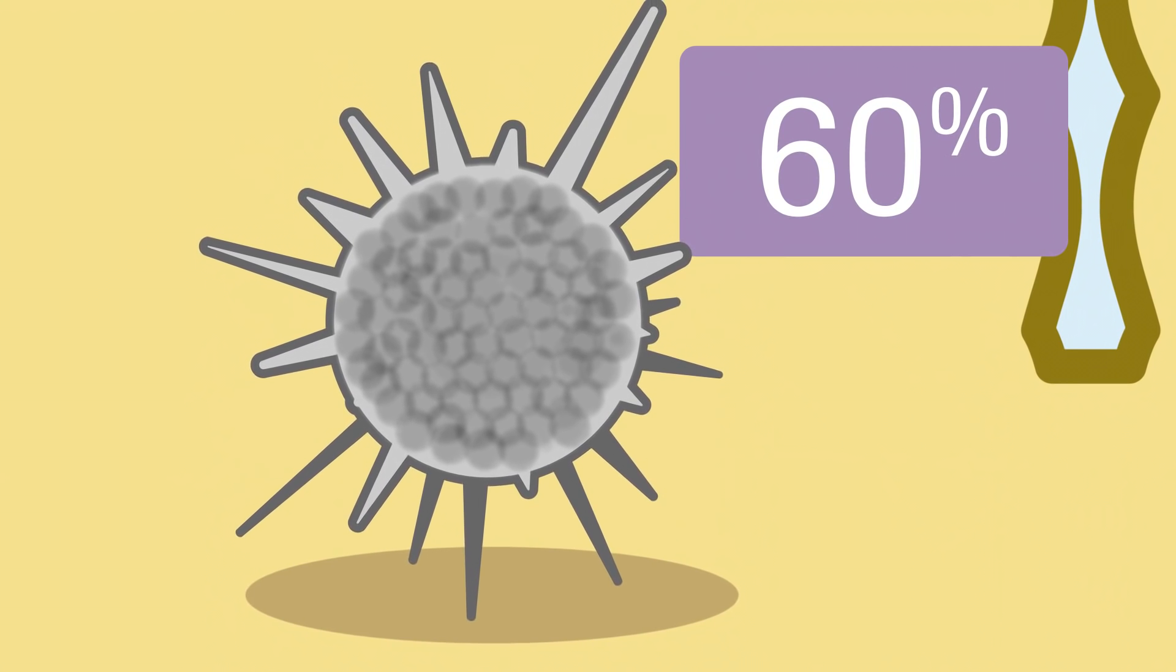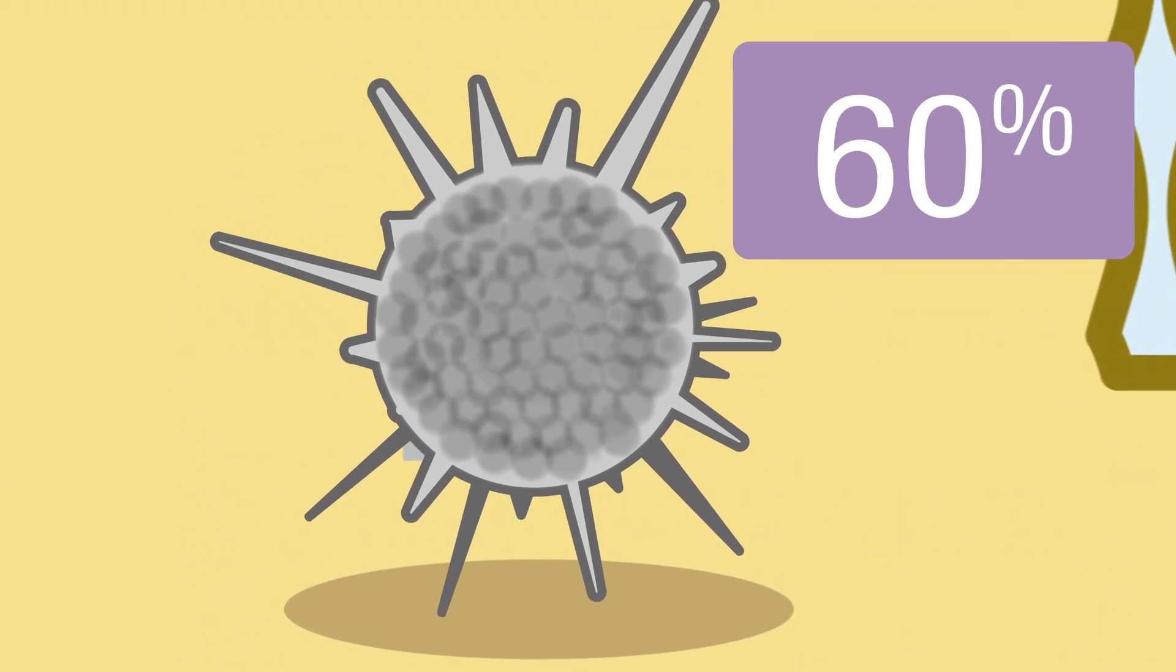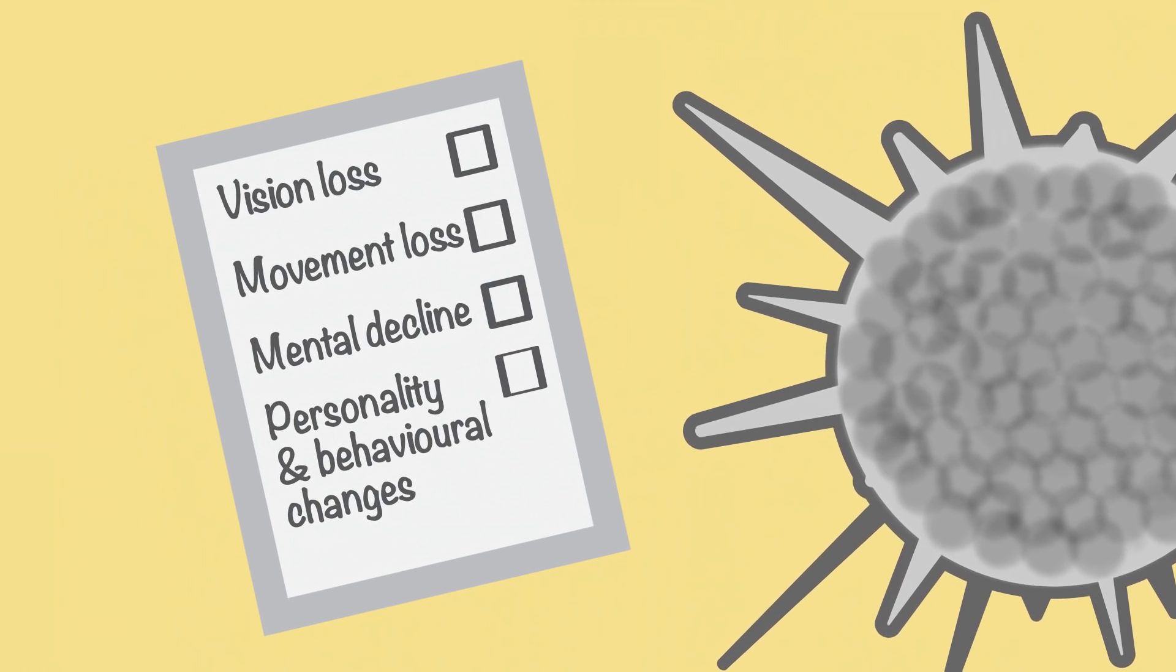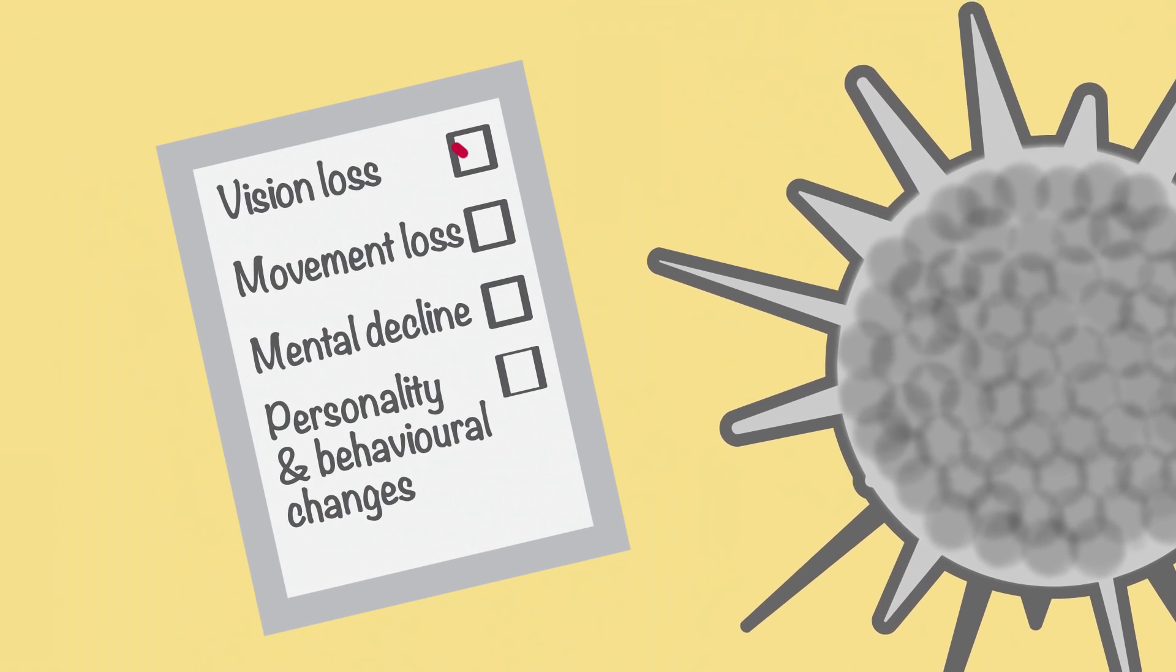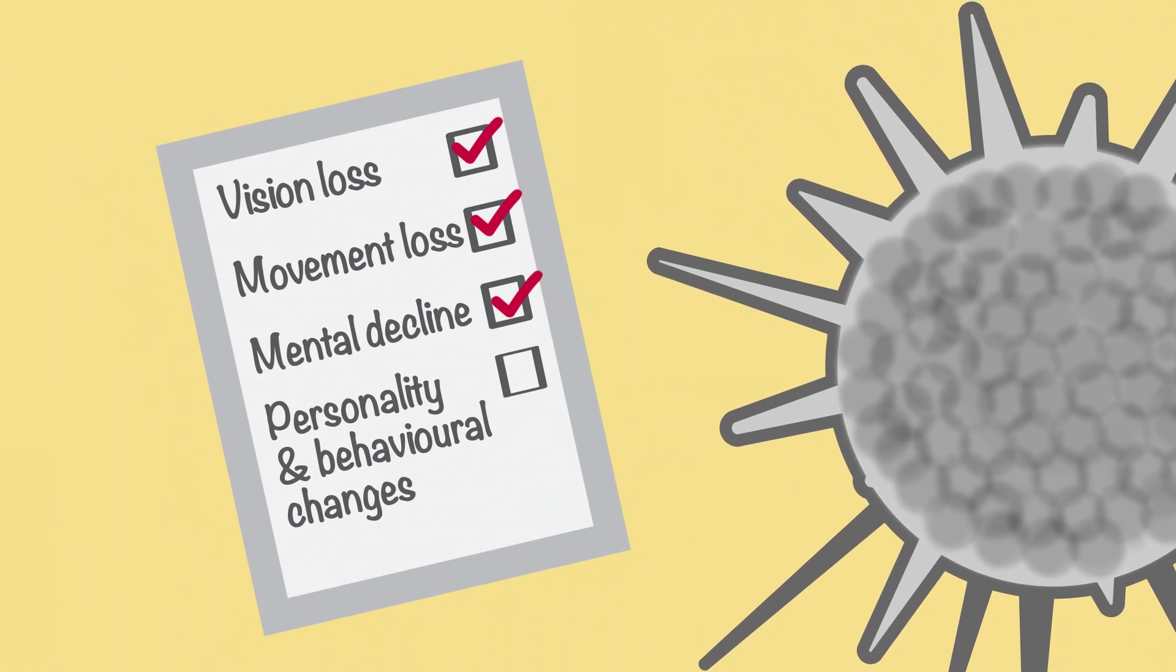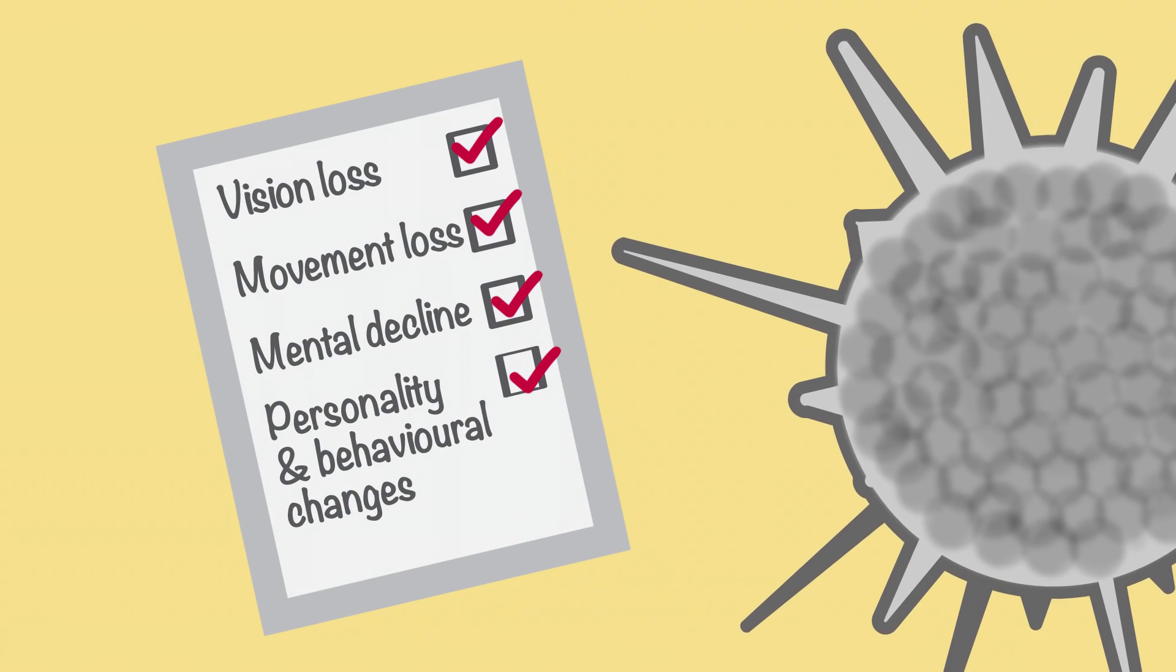Tumours that spread to the brain, also called brain metastasis, are particularly devastating to patients because they can result in loss of vital functions such as vision or movement, impact mental performance, or cause changes in personality and behaviour.